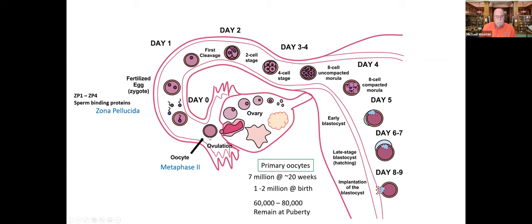Once released from the ovary, the oocyte goes through meiosis metaphase two — the final division — releasing the secondary portions of the DNA, the other side of the sister chromatids. You've already done the first part, which makes a primary oocyte. Now you're separating them to get a haploid cell, which occurs at about the time of ovulation or shortly after.